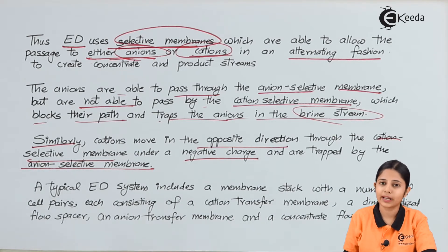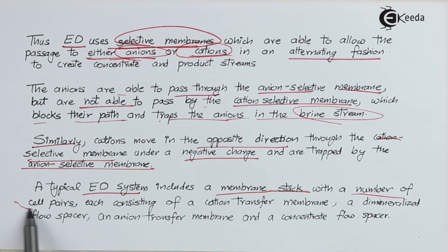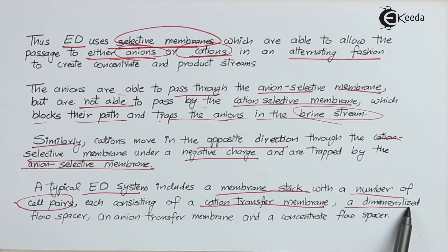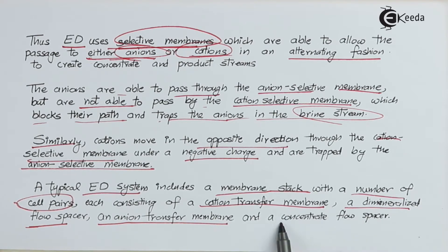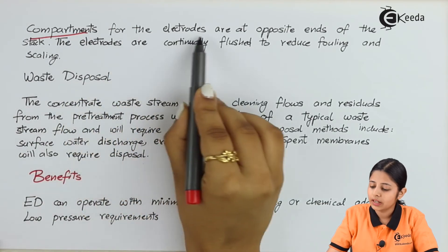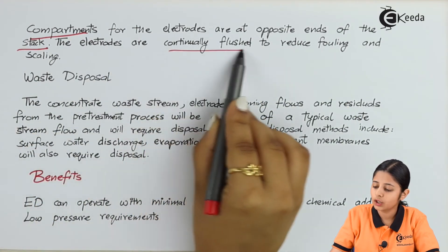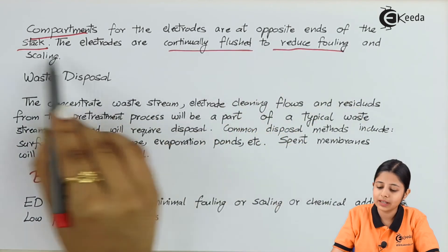A typical ED system includes a membrane stack with a number of cell pairs, each consisting of a cation transfer membrane and demineralized flow spacer, an anion transfer membrane and concentrated flow spacer. Compartments for the electrodes are at opposite ends of the stack. The electrodes are continually flushed to reduce fouling and scaling.